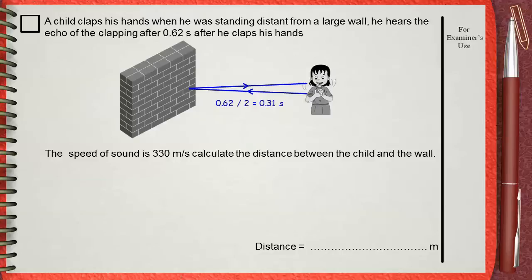This is the time taken by the sound from the child to the wall only one time. We have speed equals distance over time. Distance equals speed multiplied by time.